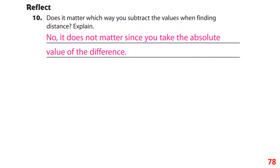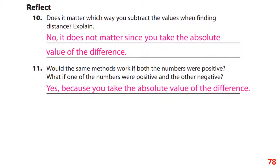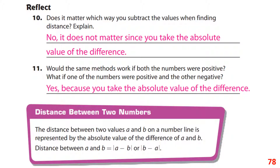No matter which direction you go, distance is always positive — a negative value would represent direction, not distance. This method works whether the numbers are both negative, both positive, or one of each. To find the distance between a and b, take the absolute value of a minus b or b minus a; the answer will always be positive.